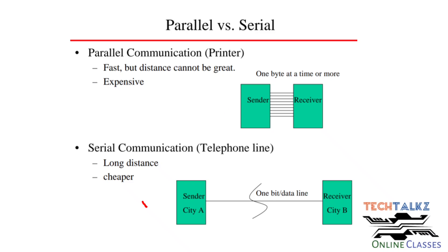Short distance communication is okay with parallel. In serial communication, at a time only 1 bit is transferred per data line. For long distance communication, serial communication is preferred.